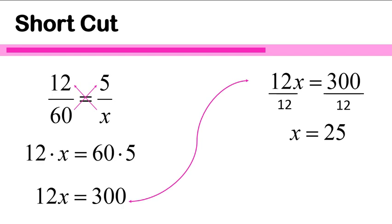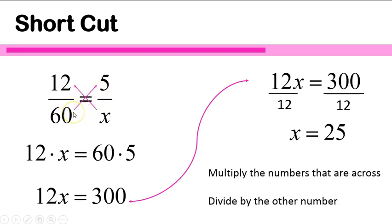Now I want to show you a quick shortcut. This is the original equation we solved using cross-multiplying. My shortcut is to cut out a lot of these steps because the steps are going to be the same every single time. Take the two numbers that are across from each other and multiply those numbers, then divide by whatever number is left. So multiply the numbers that are across from each other — 60 times 5 gives us 300 — and then divide by the remaining number, which is 12. We'll multiply the numbers across from each other and divide by the other number that's left.